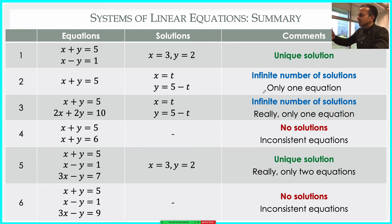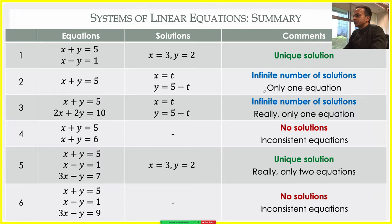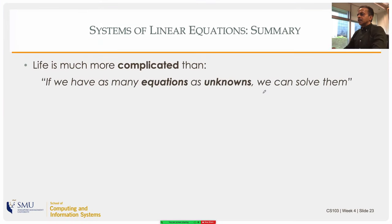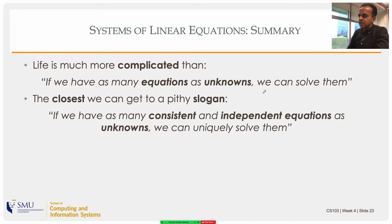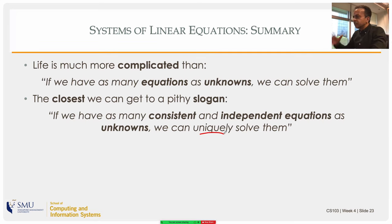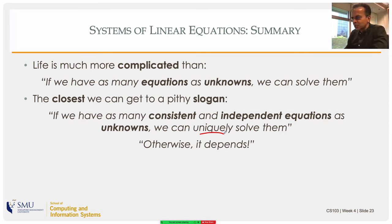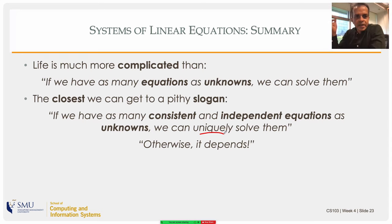So the statement from high school — that if you have as many equations as unknowns you can always solve them — is not true. The closest we can get is: if we have as many consistent and independent equations as unknowns, we can uniquely solve them. If not, we don't really know without looking at the system.